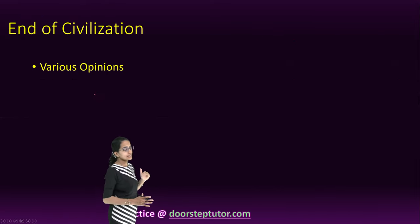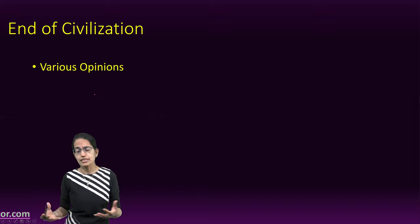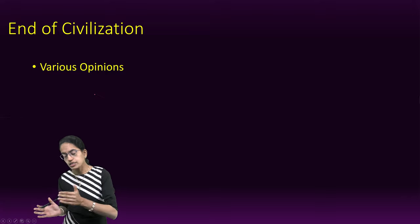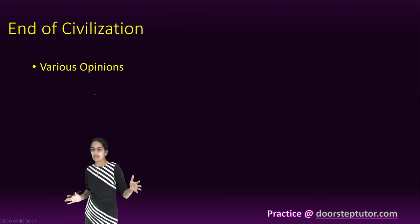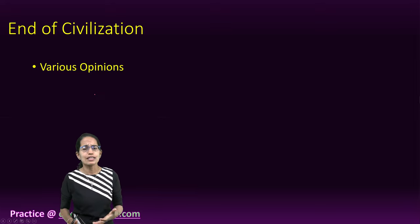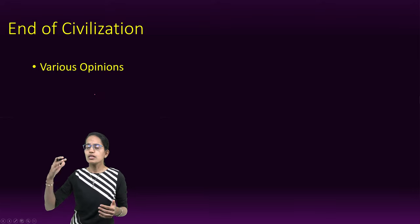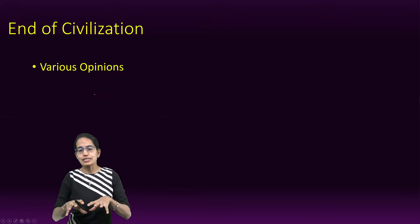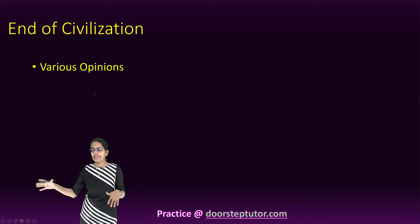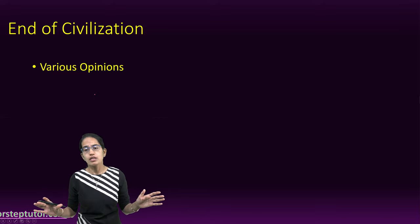How the civilization ended is another important question with various conflicting ideas. Cholistan, a desert region of Pakistan separated from India's Thar Desert, began to be abandoned. New settlements in regions like Gujarat, Uttar Pradesh, and Rajasthan flourished for a period and then started to disappear, along with the writings, seals, and other material culture.